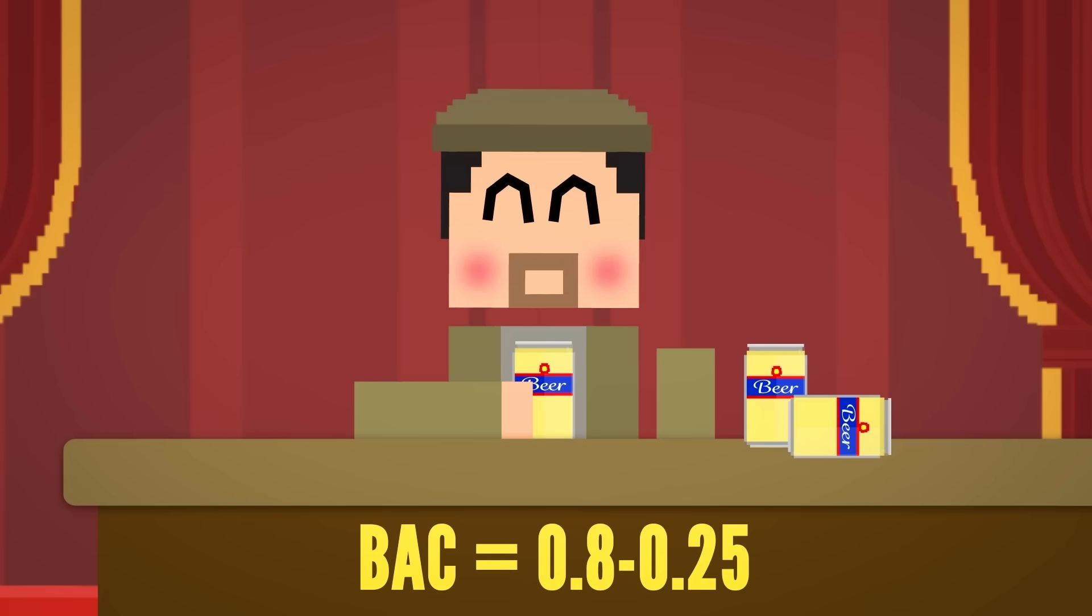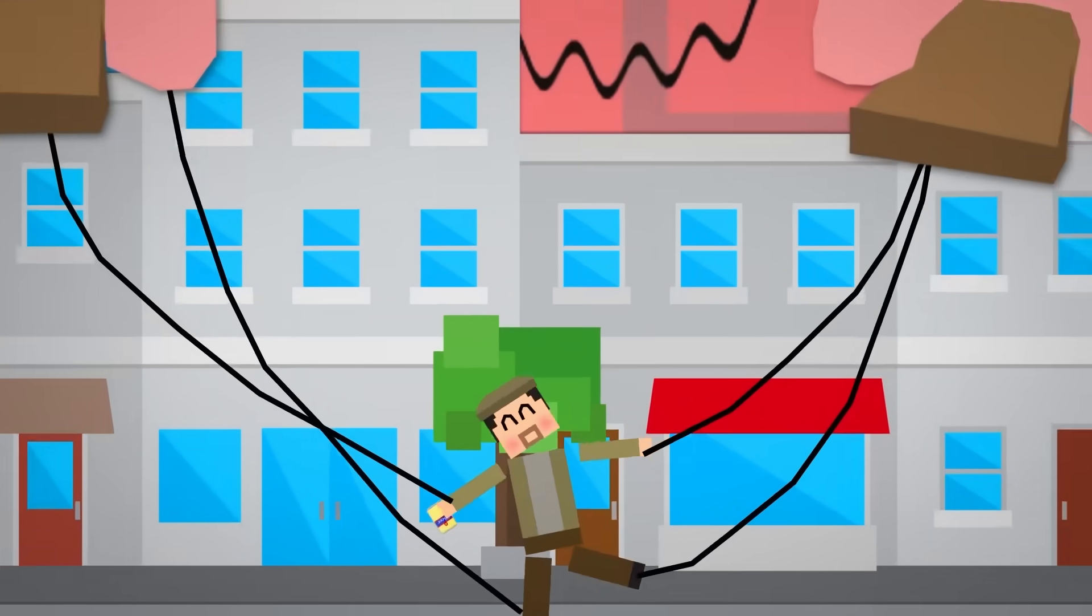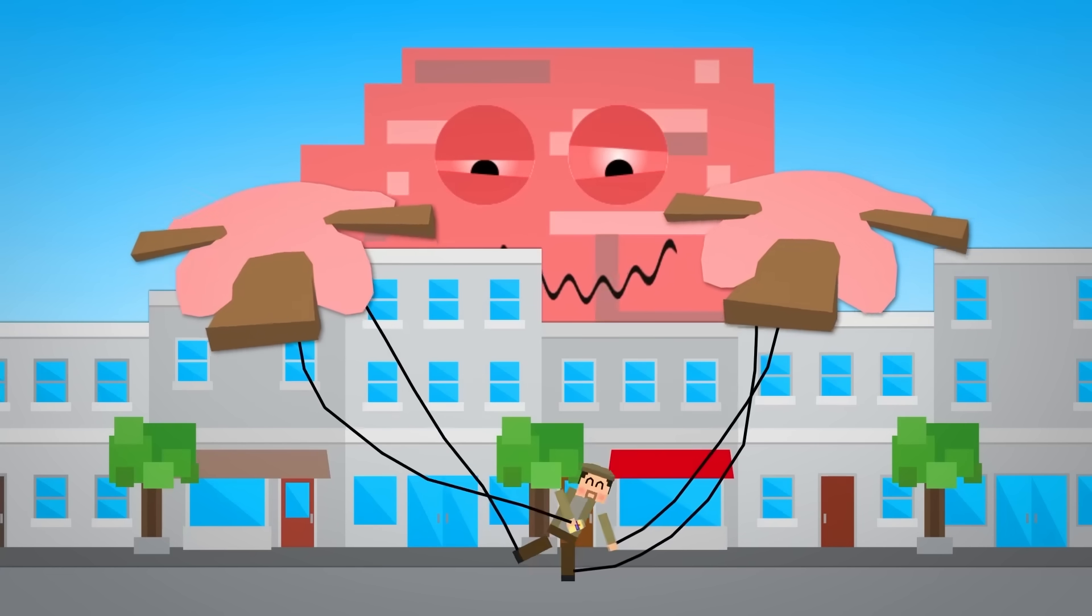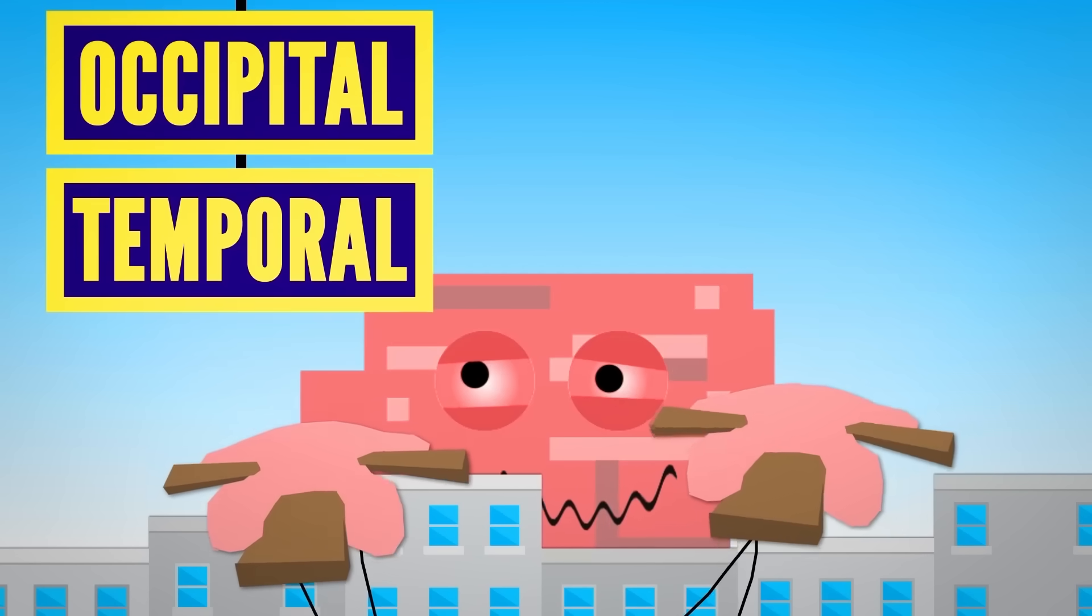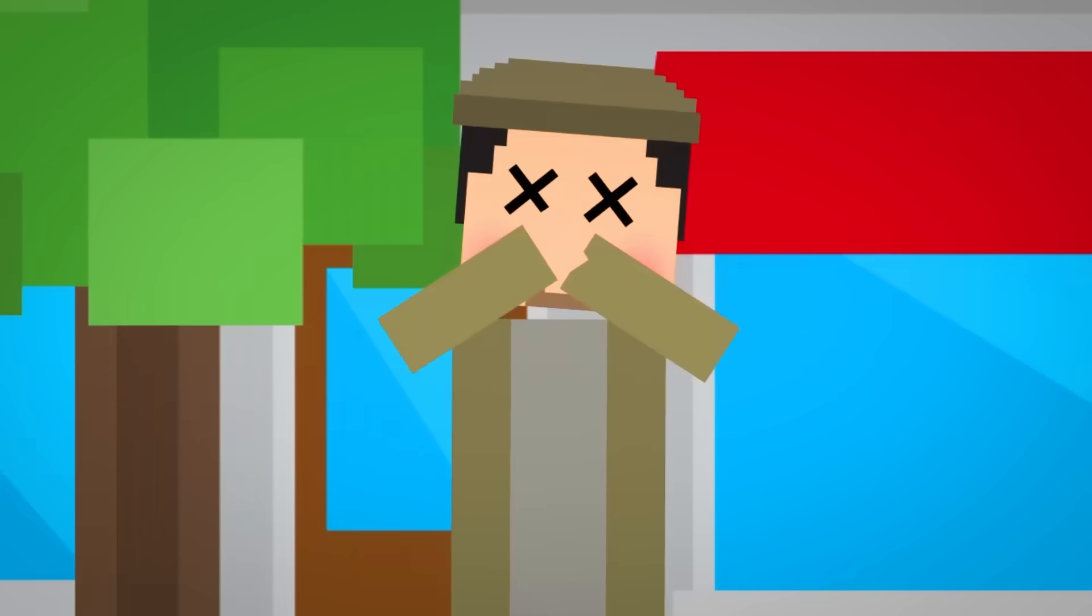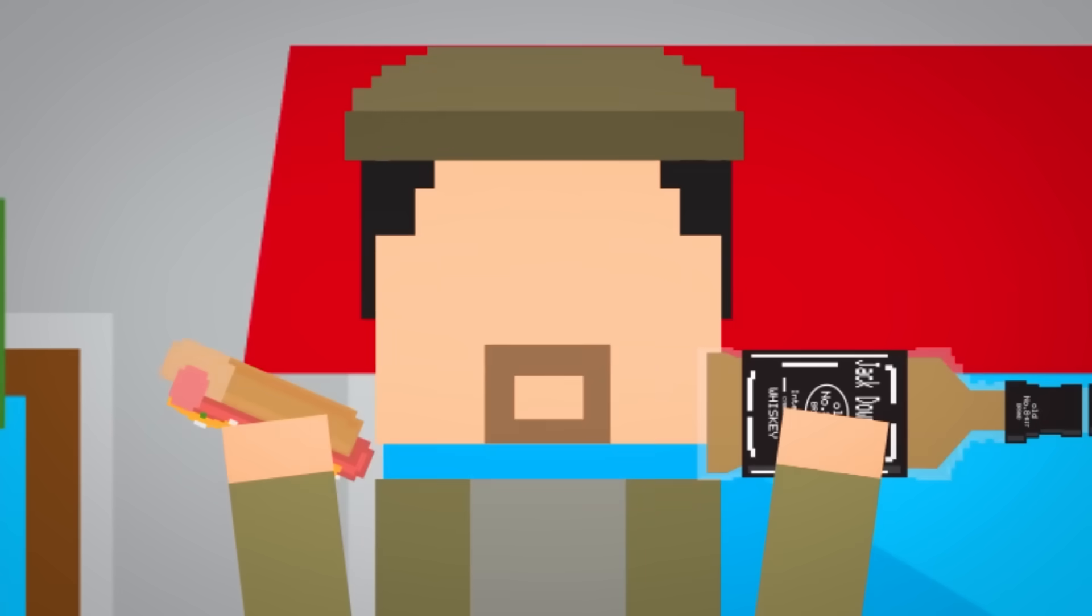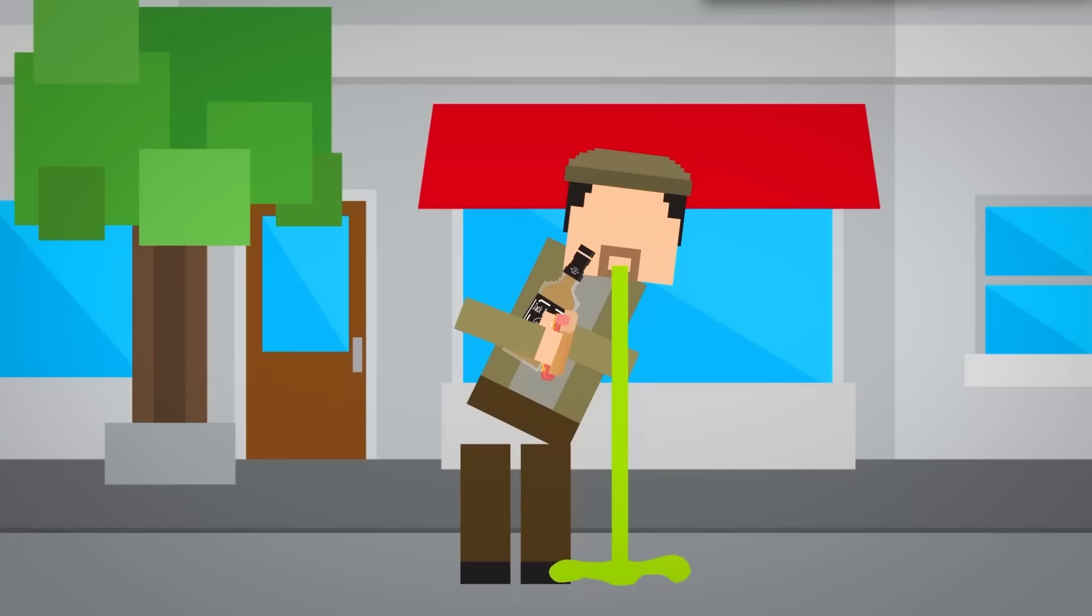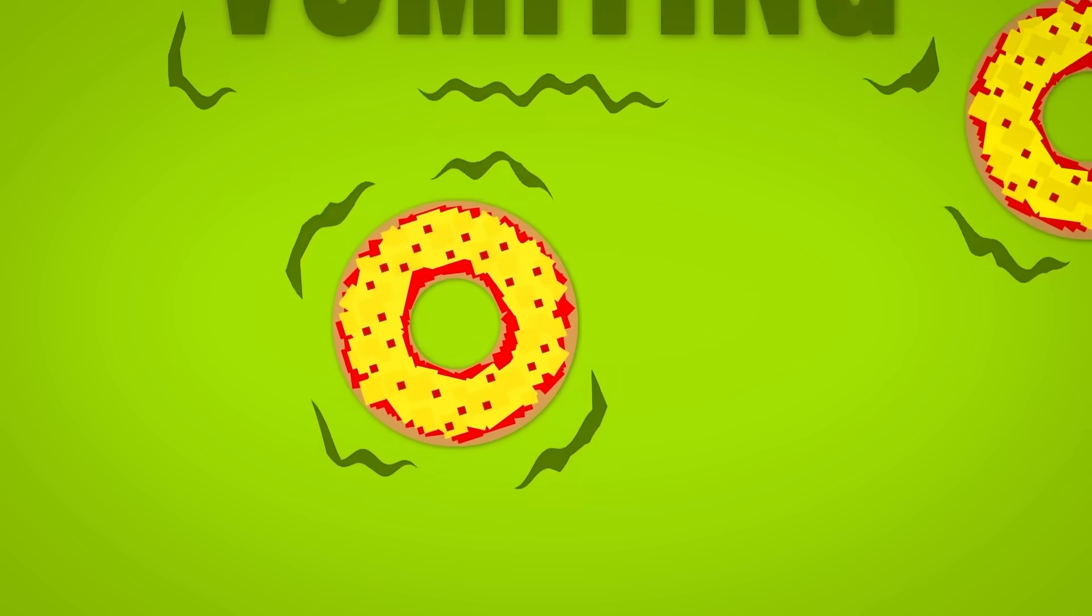Once your BAC reaches over 0.08, you will be legally intoxicated, and your brain will have trouble communicating with the rest of your body. Without a clear communication channel, impairment to your occipital, temporal, frontal, and parietal lobes will cause you to have difficulty seeing and walking straight, to slur your words when you talk, to have lowered inhibitions and mood swings, to have poor judgement, and to struggle to keep the contents of your stomach from exiting your body. I'm talking about vomiting, and I'm not sure YouTube will let me show that.